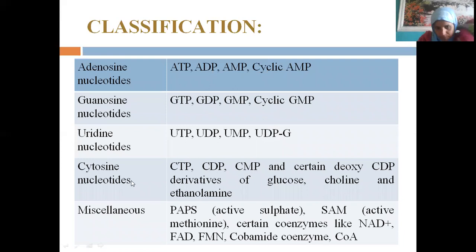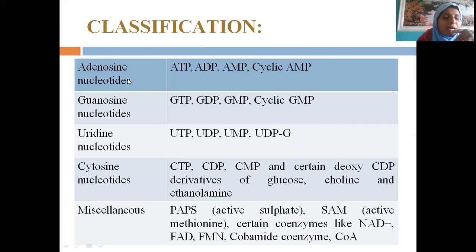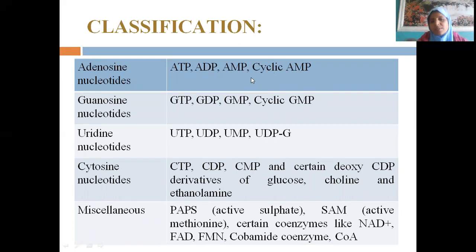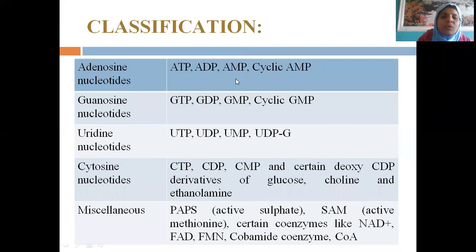Classification of nucleotides includes adenine nucleotides: ATP, ADP, AMP. These are the biologically active forms involved in various metabolisms. ATP is the energy source. Cyclic AMP is also found. These nucleotides appear in glycolysis, gluconeogenesis, glycogenolysis, beta-oxidation of fatty acids — any metabolic cycle involves these nucleotides in some reaction. Guanosine nucleotides include GTP, GDP. Uridine nucleotides include UTP, UDP, UMP. Cytosine nucleotides include CTP, CDP.